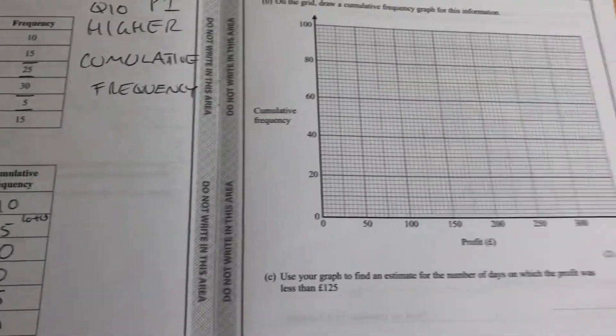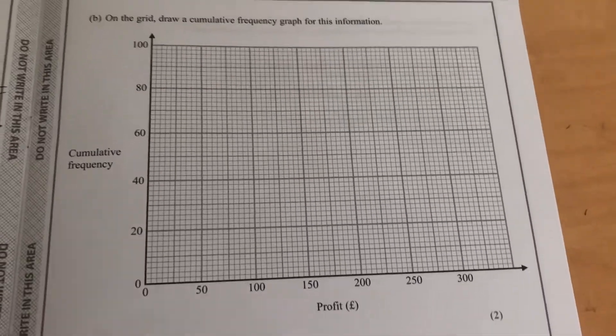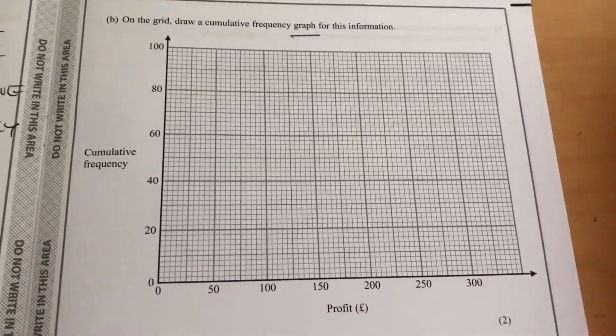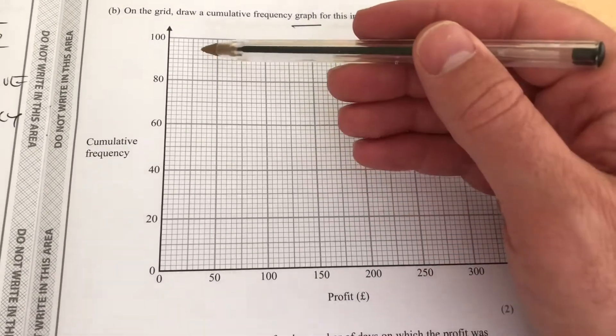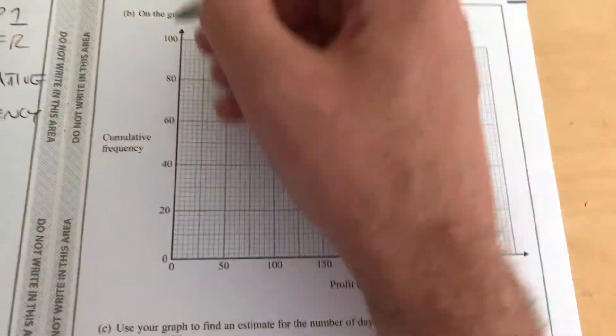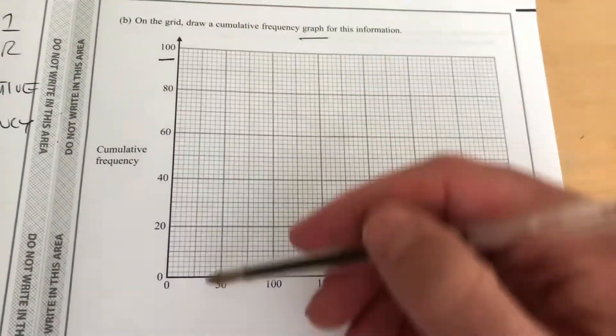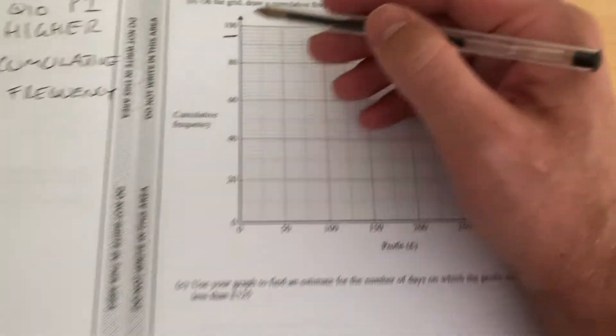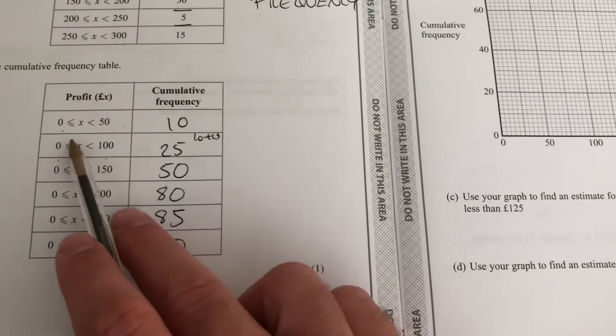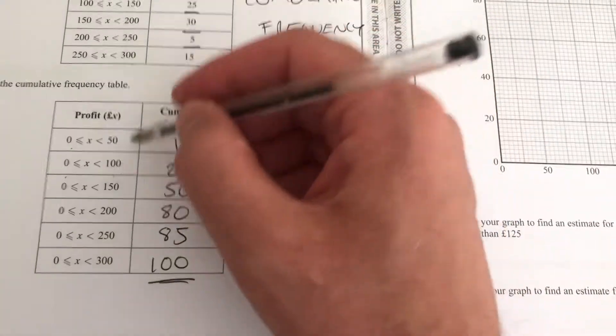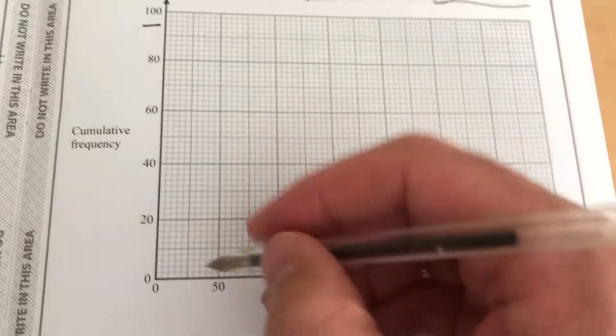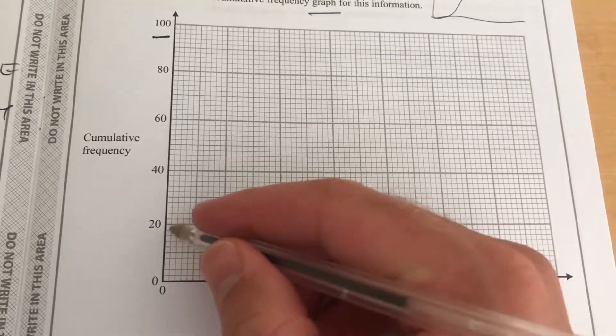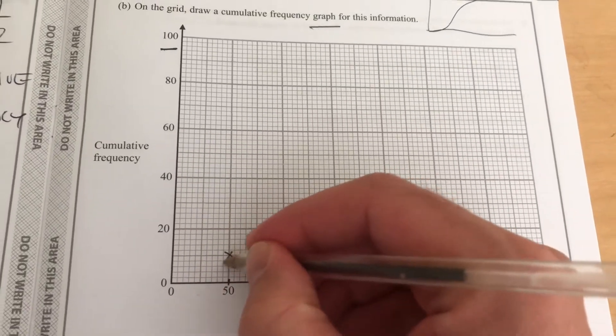Now we need to turn this into a cumulative frequency graph. We've got the 100 days here and the profit there. We need to have that sigmoid S-shaped curve ending on 100. So that first category, up to £50, we do it at the end of that interval, would be 10. So I go into that interval here, 20, halfway along there, put an X there.